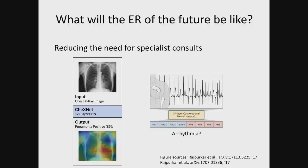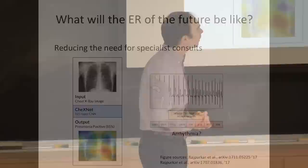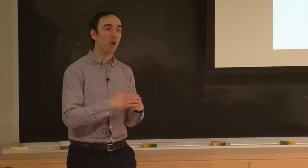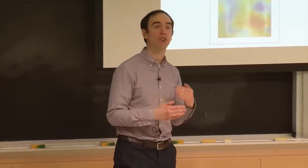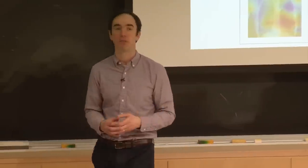Other examples include reducing the need for specialist consults. A patient might get a chest x-ray quickly, but finding a radiologist to review it could take a lot of time — days in some places. This is an area where data is quite standardized. MIT just released a dataset of 300,000 chest x-rays with associated labels. We could build convolutional neural network-based algorithms — similar to those used in object recognition — to predict what's going on with the patient, such as whether they have pneumonia. This could reduce radiology load and translate algorithms to resource-poor settings like developing nations.